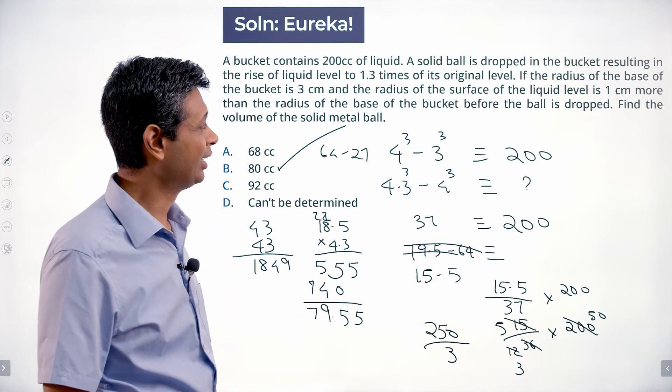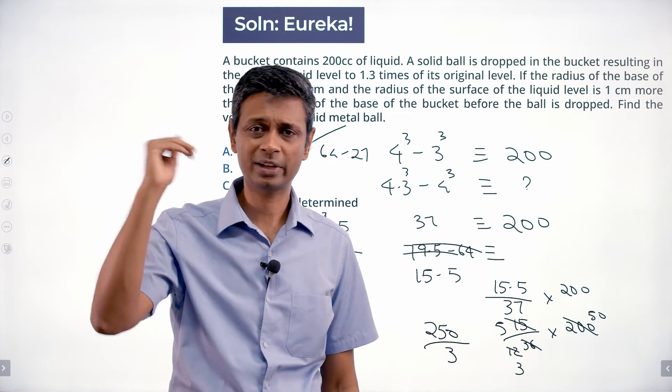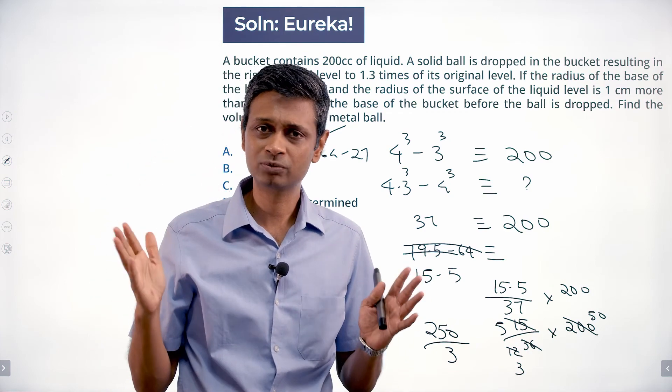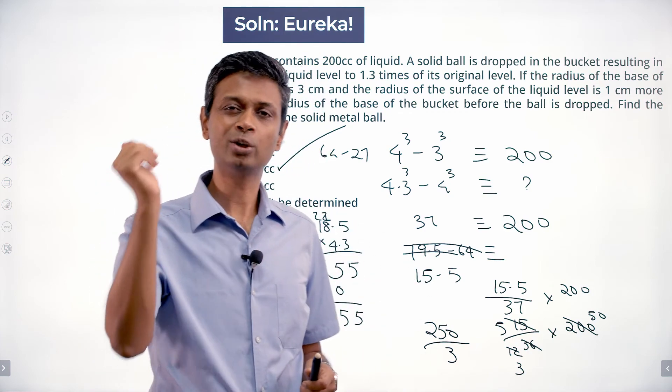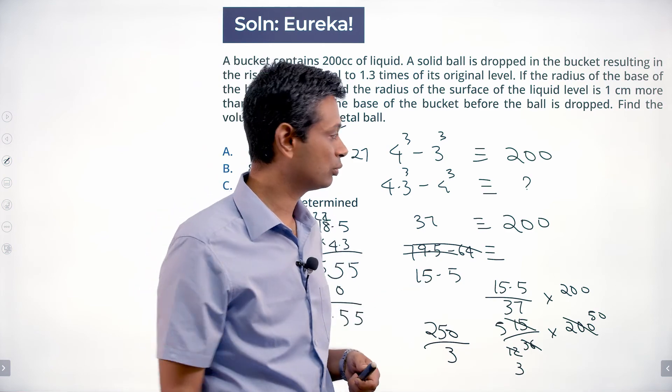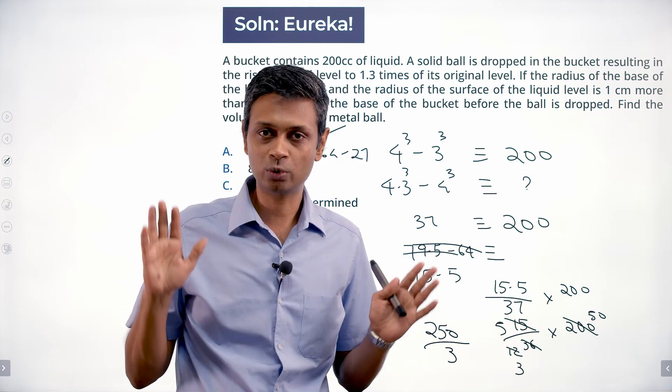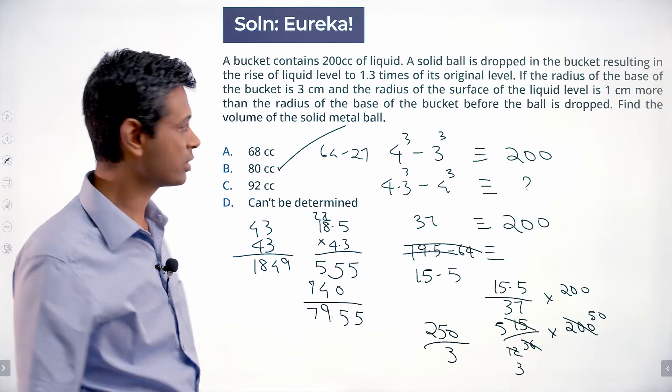The key thing here is to shed out the 1/3s and πs and r²s and hs, just deal with the numbers. 4³ minus 3³ is linked to 200, 4.3³ minus 4³, what is that linked to? Do it as a ratio. Otherwise the computation is a pain, but doable question.